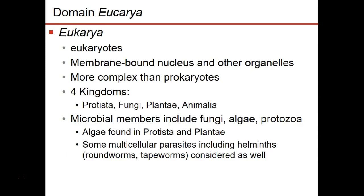Eukaryotes — you and I are eukaryotes, and all animals are eukaryotes. Eukaryotes all have a nucleus and organelles, and they are more complex than prokaryotic organisms. They can be single-celled or multicellular. There are four groups of eukaryotes: protists, fungi, plant, or animal. We fall under animal. In microbiology, we do study some animals — insects because they are vectors, and worms because they are microscopic in their egg or larval form. Algae are often grouped in either plant or protista, depending on the type.